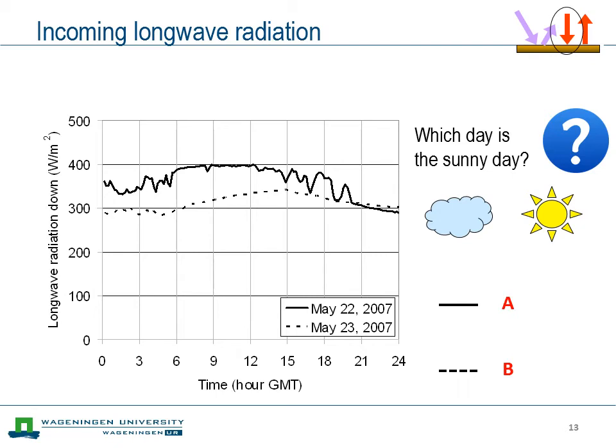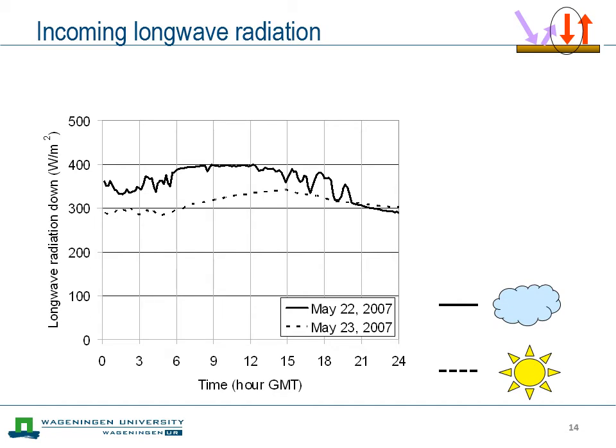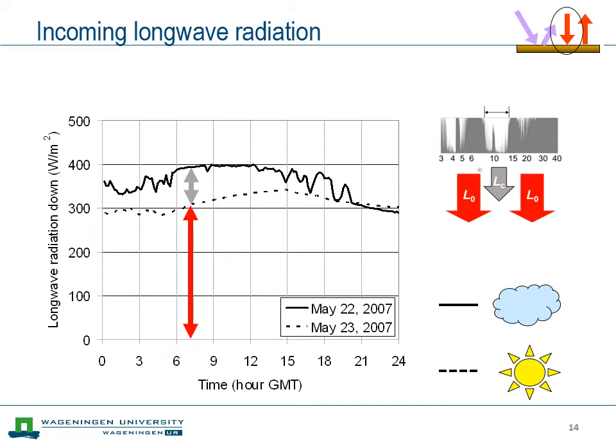Now a small exercise: we see the diurnal cycle of incoming longwave radiation for two days. The question is which of the two days is the sunny day — solid line A or dashed line B? The answer is the dashed line — May 23 — is the sunny day. For a sunny day we only have the red part: emission by the clear atmosphere at its emission lines. On the cloudy day we additionally have longwave emission from clouds penetrating through the atmospheric window, giving higher total incoming longwave radiation.